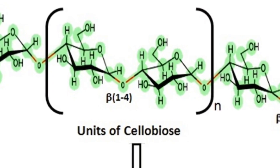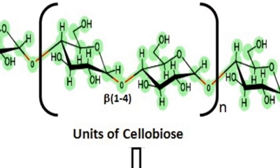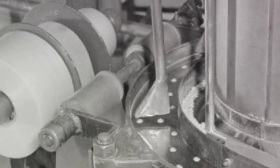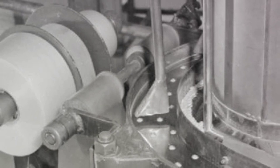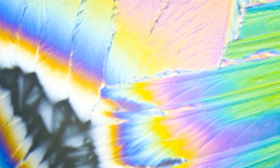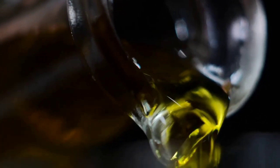Once the cellulose has been properly treated, the second key ingredient is introduced: carbon disulfide. This colorless liquid has a unique odor often compared to rotten radishes, but don't let that fool you. When carbon disulfide is introduced to the alkali-treated cellulose, it initiates a reaction that transforms the cellulose into cellulose xanthate — a yellowish-orange substance that is soluble in more materials than cellulose. The next step is to dissolve the cellulose xanthate in a dilute solution of sodium hydroxide, resulting in a thick, syrupy liquid finally known as viscose.